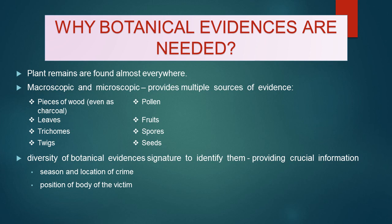Plant remains are found almost everywhere and can be both macroscopic and microscopic. They offer multiple sources of evidence such as pieces of wood — even as charcoal — twigs, leaves, trichomes, seeds, fruits, pollens, spores, and more. The number and morphological diversity of these botanical evidences act as their signature to identify them.